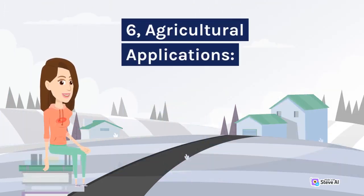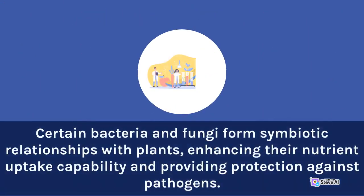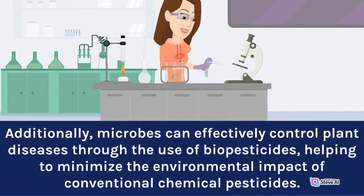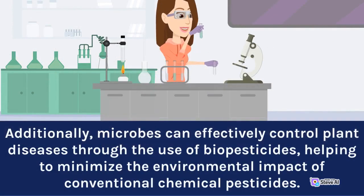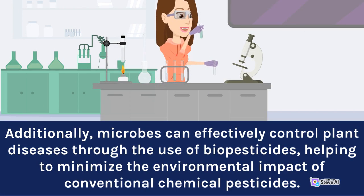Agricultural Applications. Microbes play a vital role in agriculture, enabling sustainable and eco-friendly farming practices. Certain bacteria and fungi form symbiotic relationships with plants, enhancing their nutrient-uptake capability and providing protection against pathogens. This process, known as biofertilization, reduces the need for chemical fertilizers and promotes soil fertility. Additionally, microbes can effectively control plant diseases through the use of biopesticides, helping to minimize the environmental impact of conventional chemical pesticides.